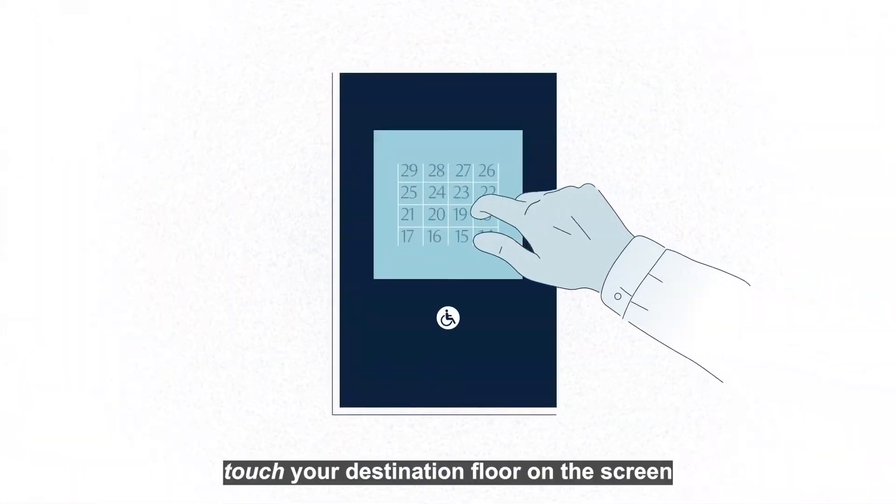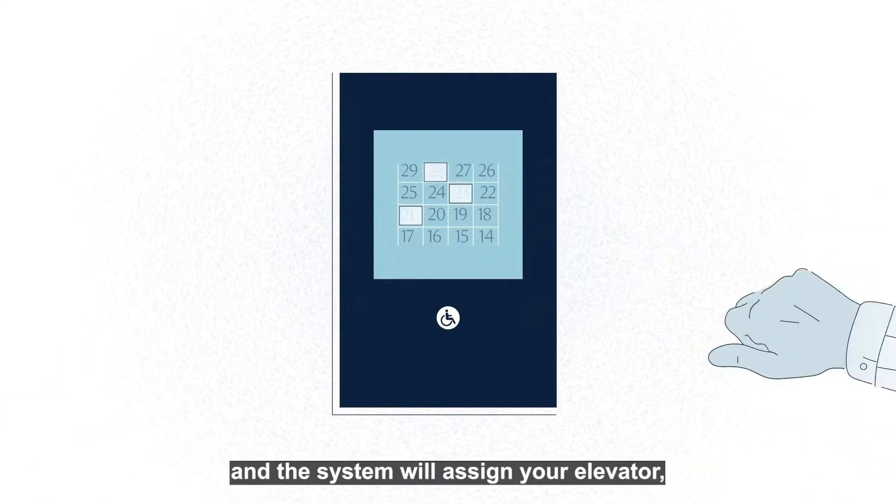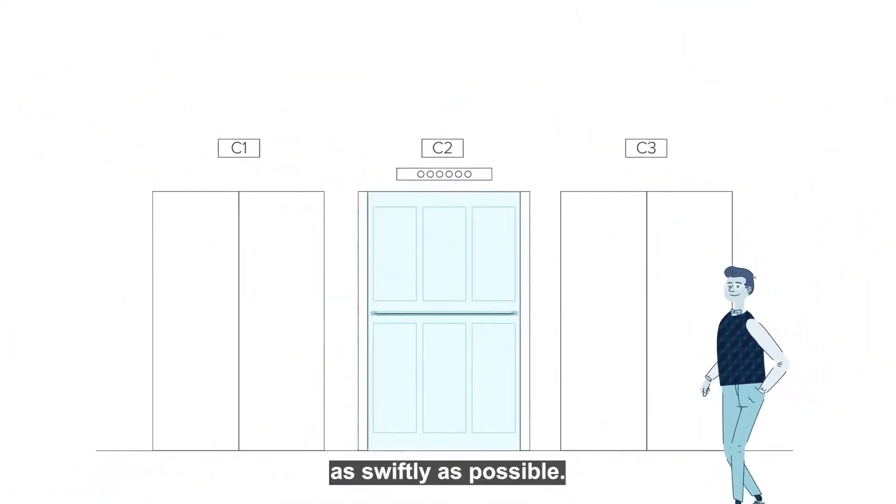To begin, touch your destination floor on the screen and the system will assign your elevator. Then travel to the elevator that will get you where you're going as swiftly as possible.